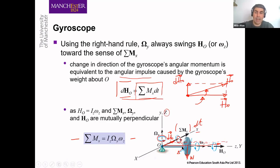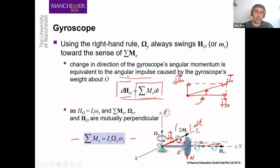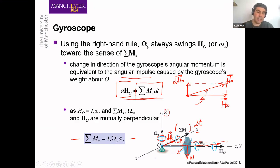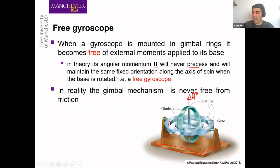H_O is the angular momentum of the spinning disc. Because of gravity, this disc creates a moment around the x-axis. From our mechanics lectures we know this effect is called angular impulse — multiplying this moment by time gives an angular impulse which causes dH_O. When you consider the total motion, you must combine H_O and dH_O. This dH_O pushes H_O in a new direction, causing the disc to rotate around the capital Z-axis as well.